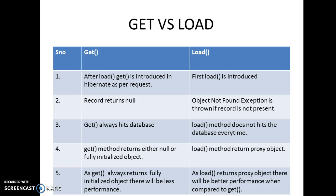The fourth point: get method returns either null or a fully initialized object. When the record is not present it returns null; when the record is present it returns the complete object. Load method always returns a proxy object — a kind of dummy object with only the id property set and the rest of the properties being null.